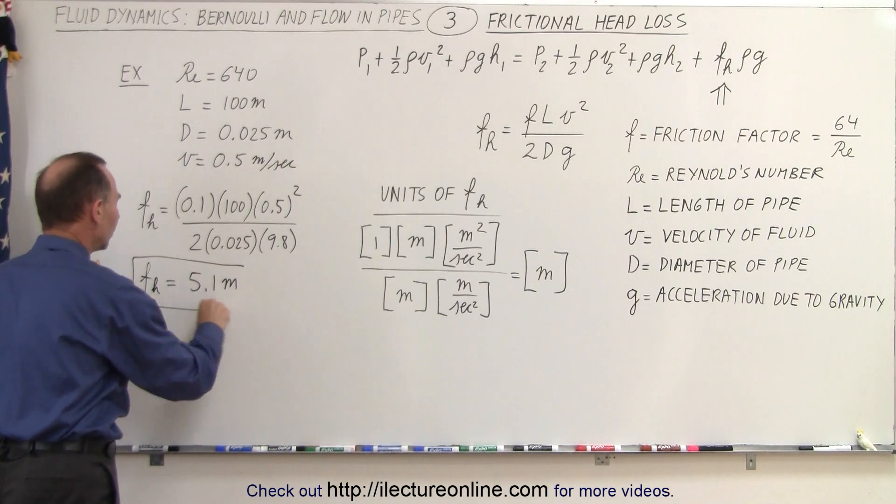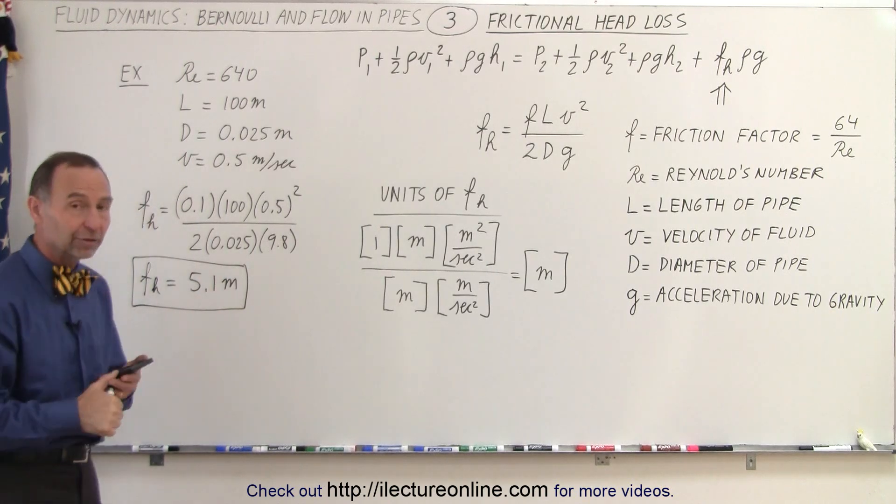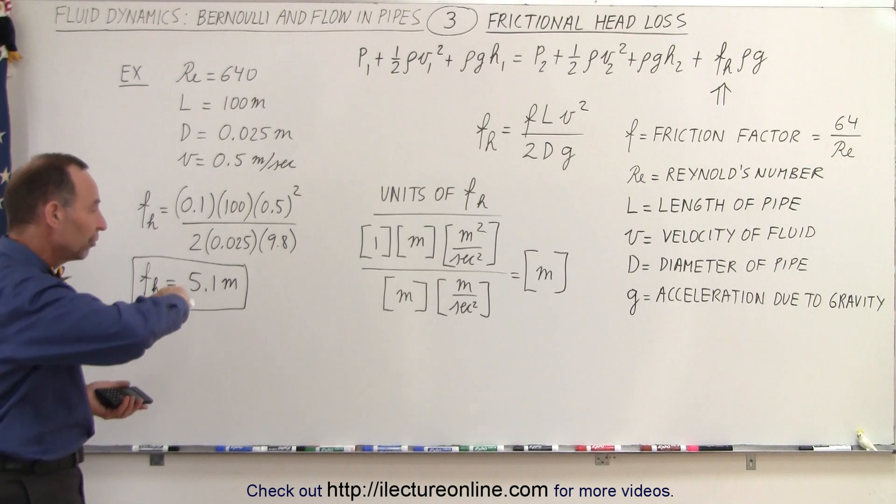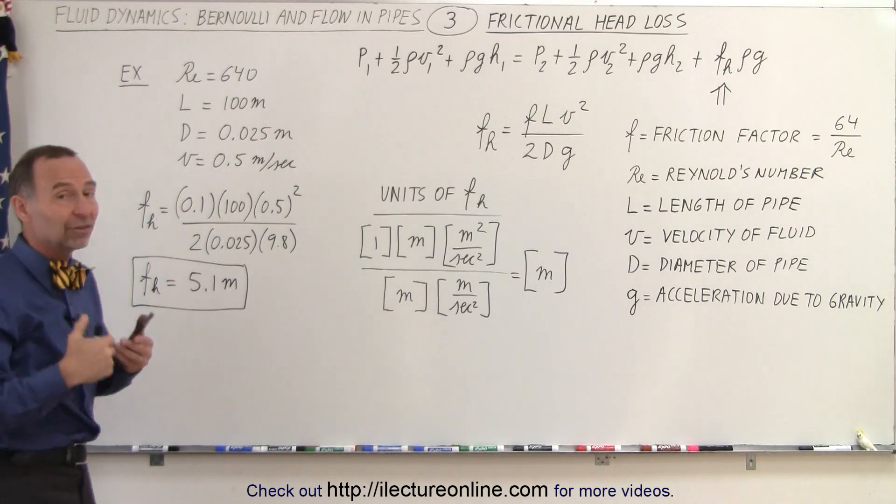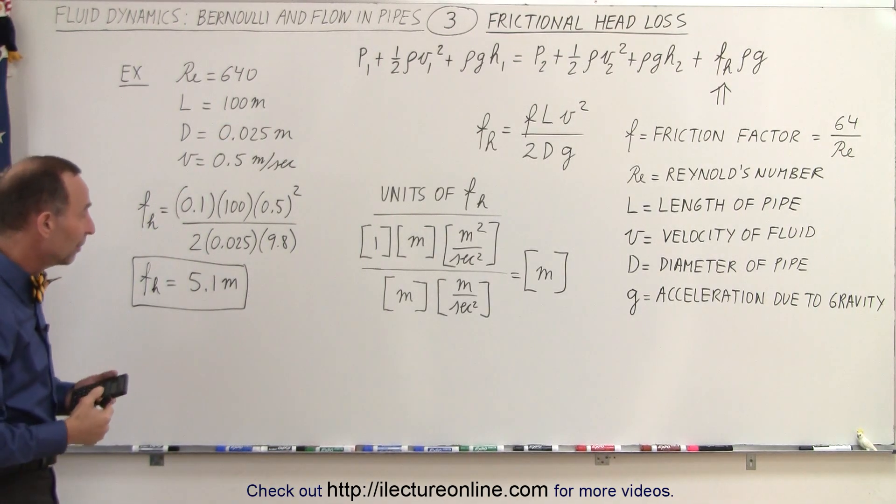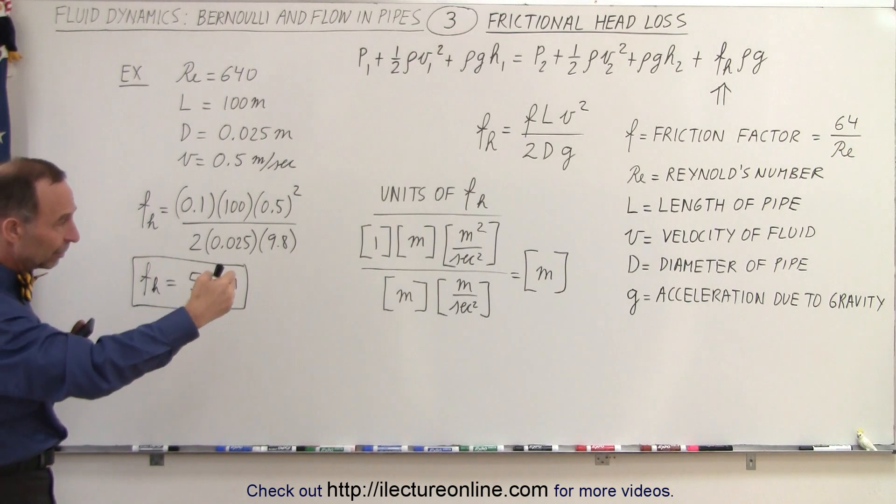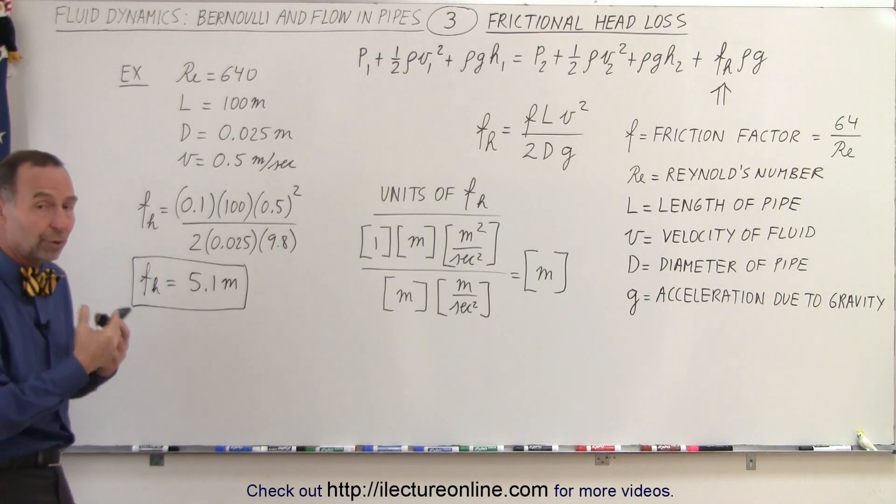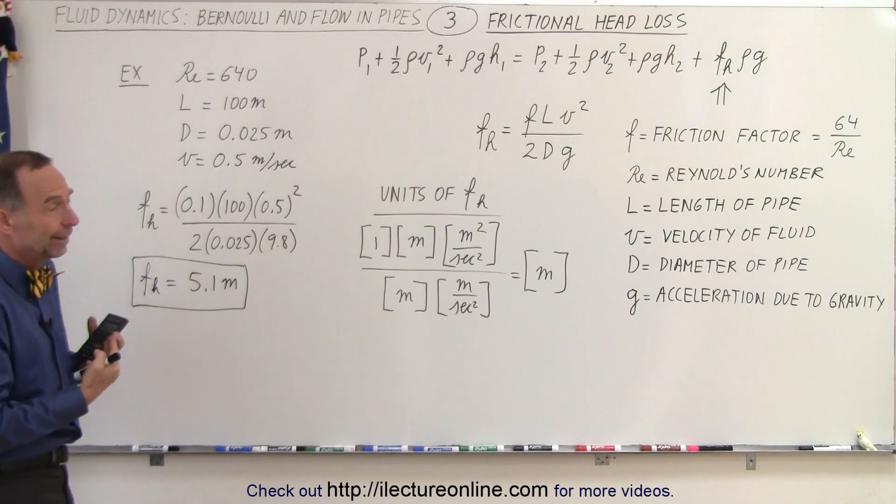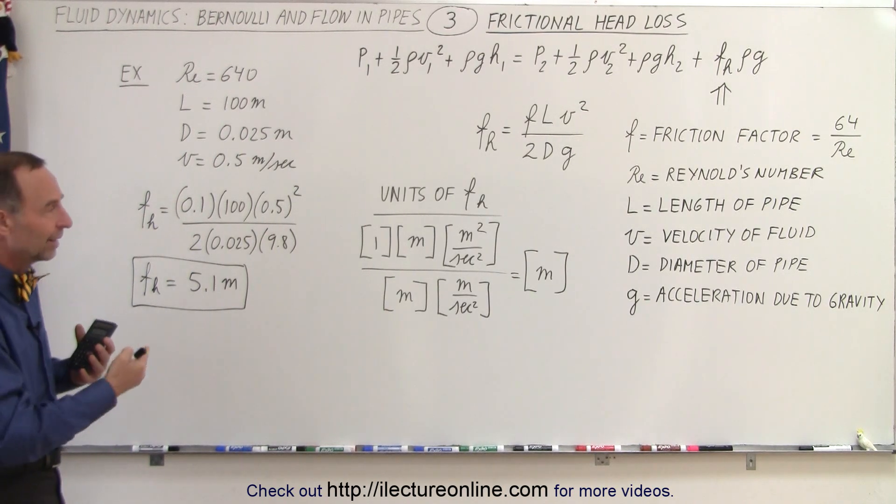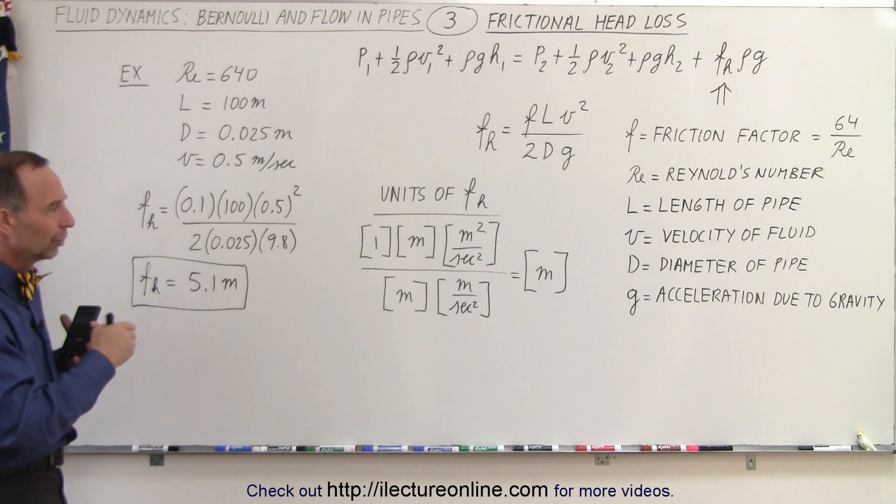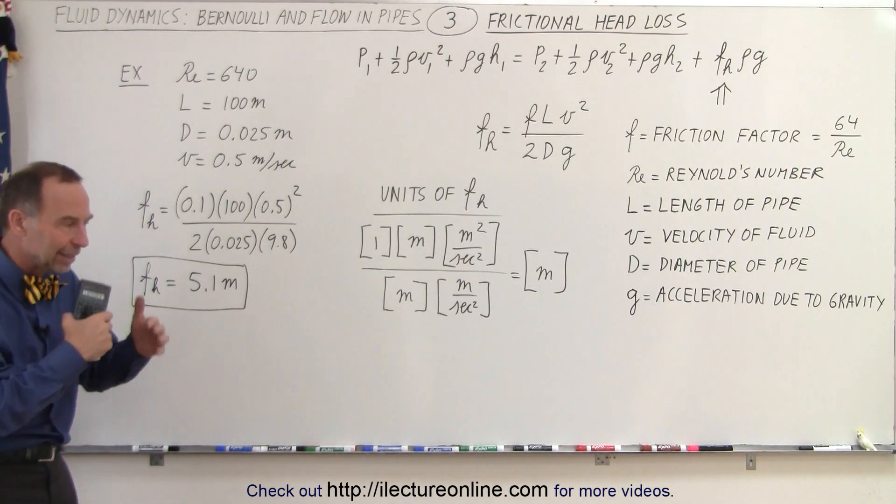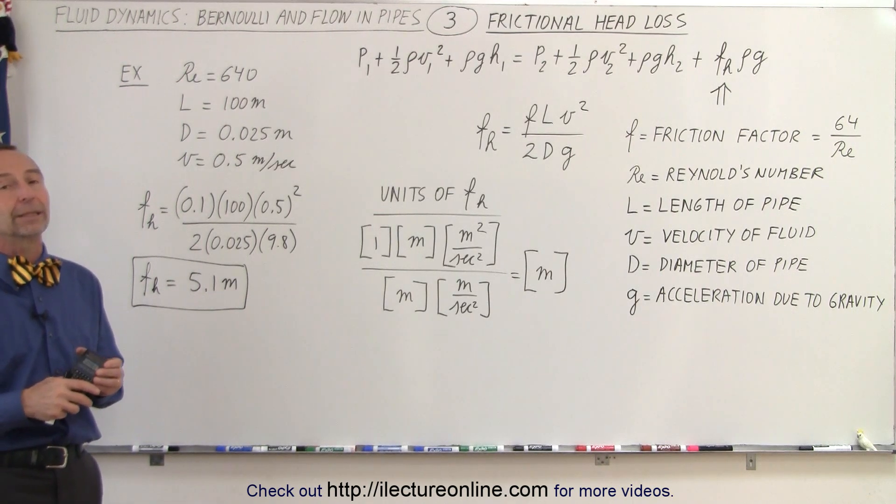So essentially, what that means is that the action of the friction of the fluid inside the pipe makes it as if we have to push the fluid to a height that's 5.1 meters higher than the actual height at the end point of the pipe. And so therefore, that would be the extra work required to push it to that greater height. In essence, it's not the greater height—it's the additional force required to push the fluid through because of the friction forces between the fluid and the pipe, and the internal friction forces within the fluid.